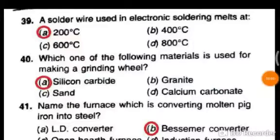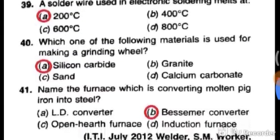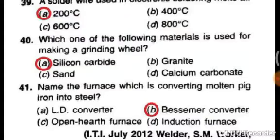A solder wire used in electronic soldering melts at 200 degrees Celsius. Which one of the following materials is used for making a grinding wheel? Silica and carbide are used for making a grinding wheel.